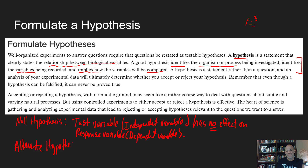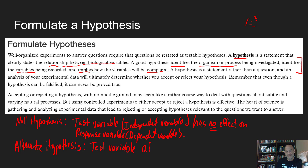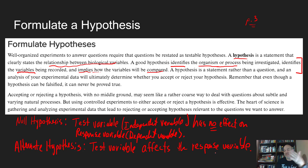You can be more specific and state that low magnesium is going to decrease the growth, or you can be a little more general — just get rid of the 'no' in the statement and rewrite it. So your test variable, the independent variable, affects the response variable. In the magnesium example: magnesium affects the growth of the corn — that's your alternate. Or more specifically: low magnesium levels decrease its growth. The alternate basically says there's going to be some influence of your independent variable on your response variable.